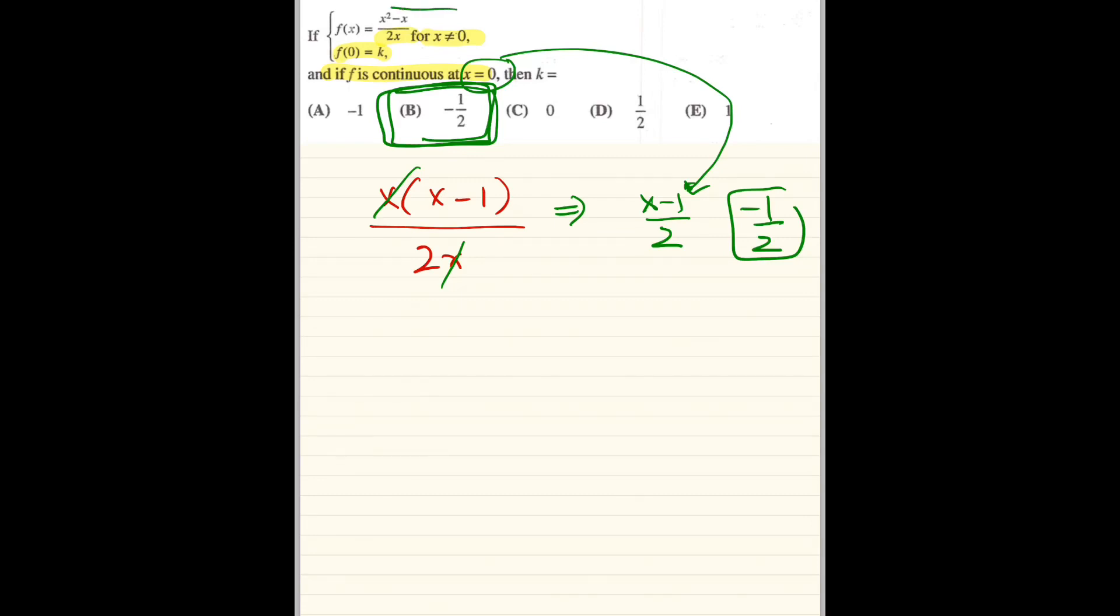So remember that this function here is basically x minus 1 over 2, which is just, you can get rewritten like this. We should put y equals, which is a line, and it has a hole at 0, negative 1 half, but we filled it in. So now it's continuous.